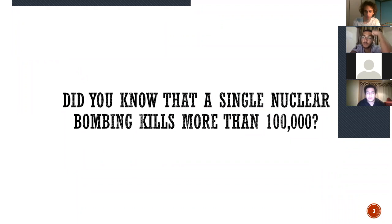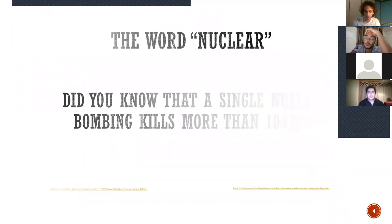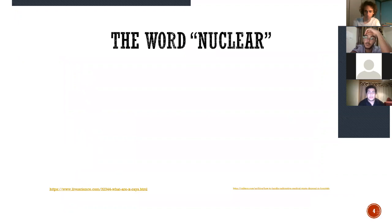Did you know that a single nuclear bomb can kill over a hundred thousand people just on impact? That's a big number. So before we start our presentation, we need to understand what the word nuclear means. Nuclear means using the power produced when the nucleus of an atom is divided or added to another nucleus.